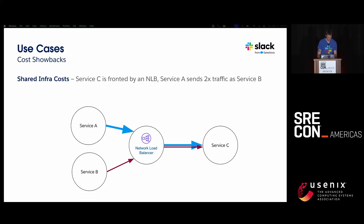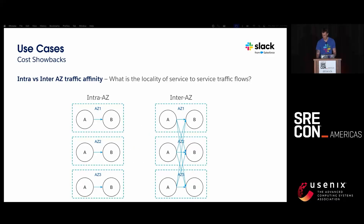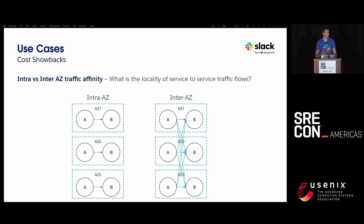Let's jump into some use cases. One big use case was our infrastructure organization wanting to push costs back to service owners. With a network load balancer where service A and B are talking to service C, and service A sends twice as much traffic, we can now implement a chargeback mechanism: service A pays two-thirds of the cost of the load balancer, service B pays the remaining third. We can also have empirical conversations about inter- versus intra-AZ costs — discussing the trade-offs in actual material costs and whether services can redesign for more economical traffic flow.